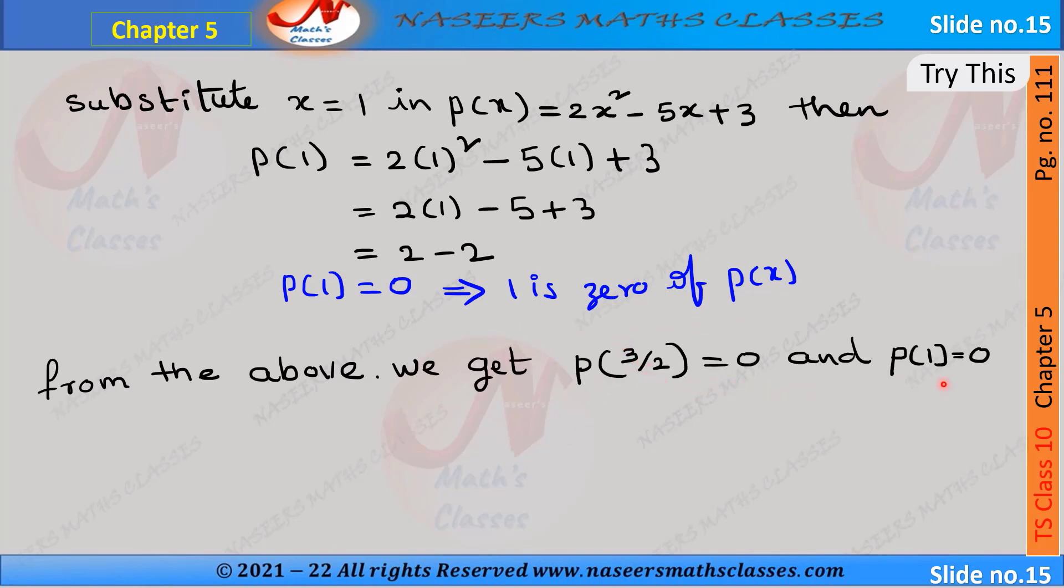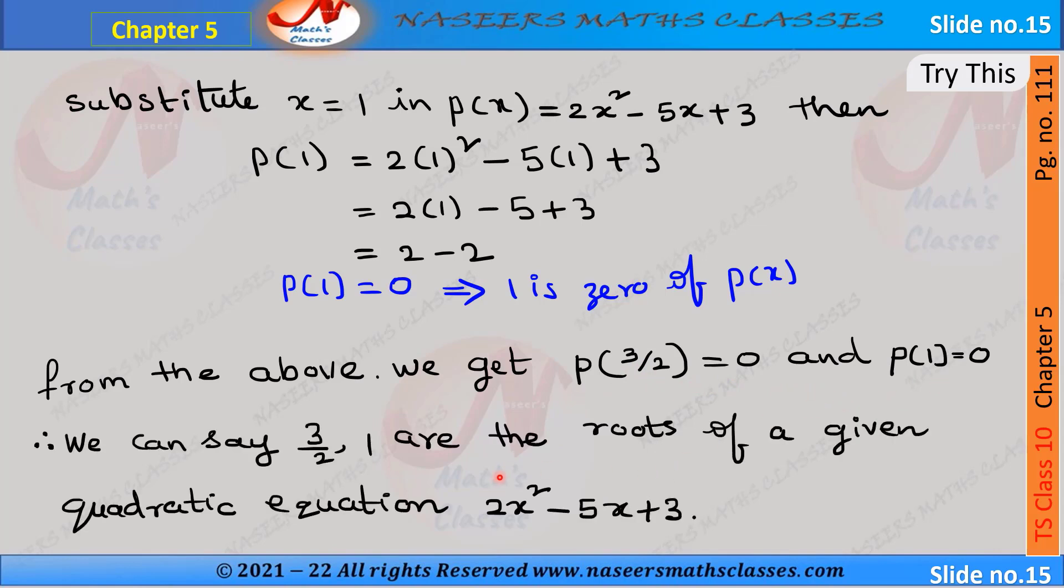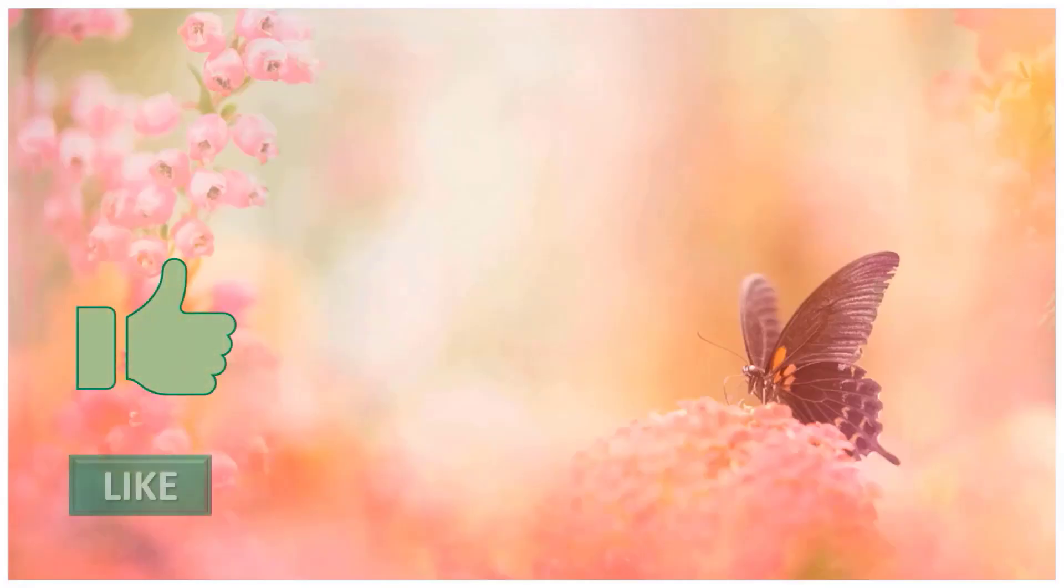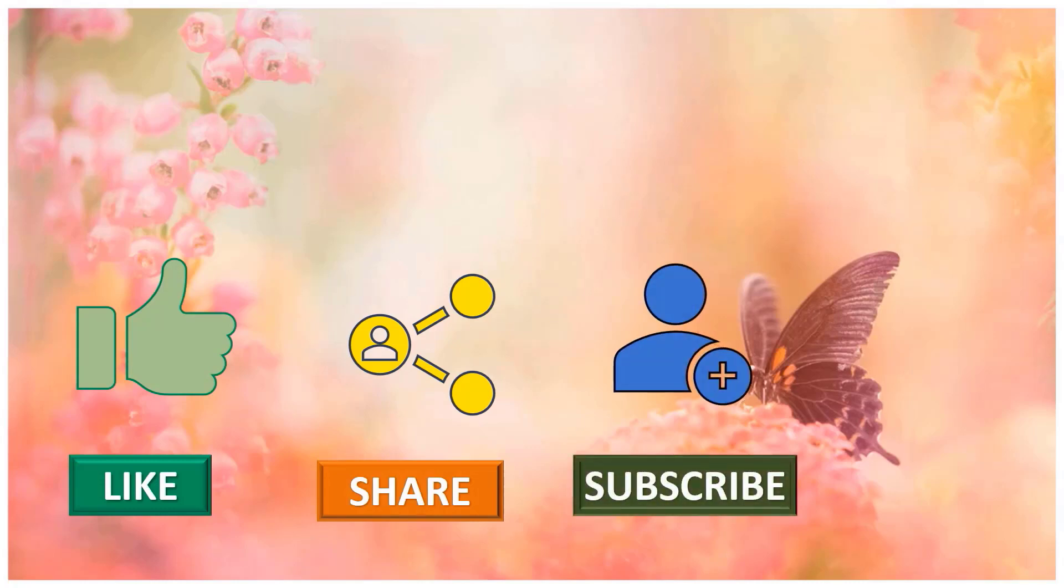From the above we get p(3/2) = 0 and p(1) = 0, so we can say that 3/2 and 1 are the roots of the given quadratic equation 2x² - 5x + 3. Please like, share, subscribe our channel for latest updates by pressing the bell icon.